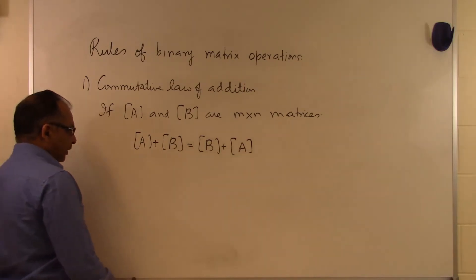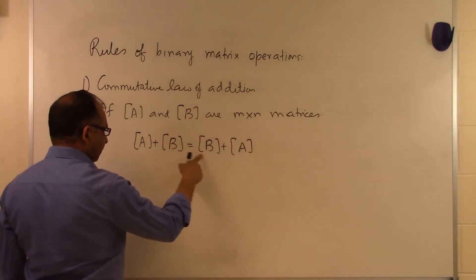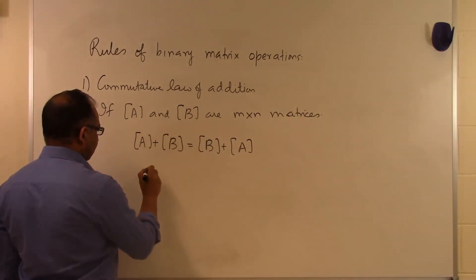Which makes sense because if this is an m by n matrix and an m by n matrix, the addition of course will be an m by n matrix. Then also, if I want to calculate the individual elements of A plus B, I'll be taking the i,j-th element of A and the i,j-th element of B.